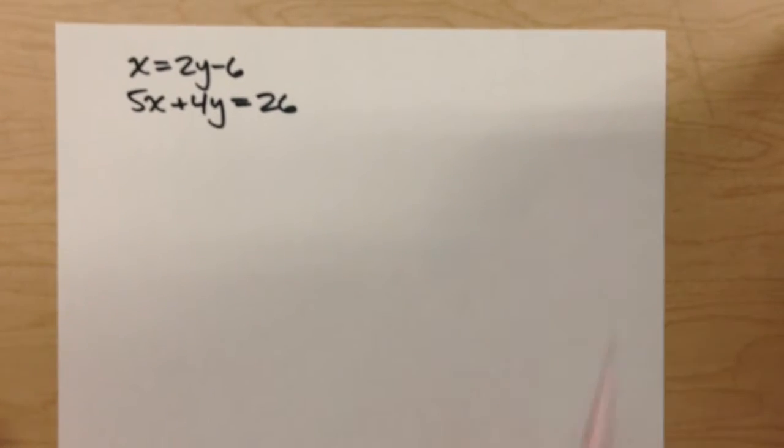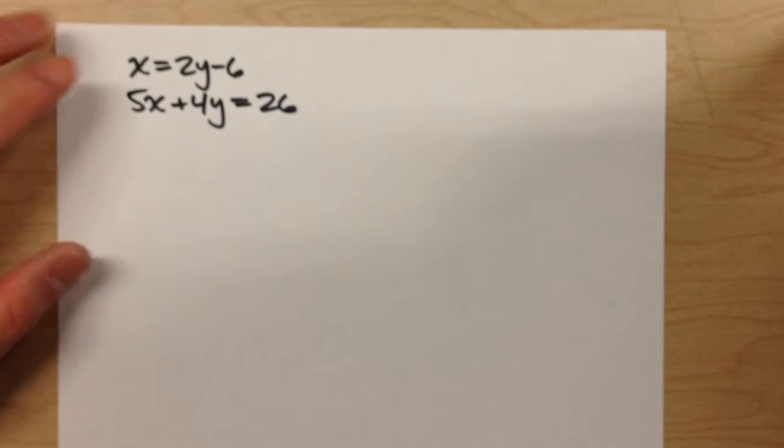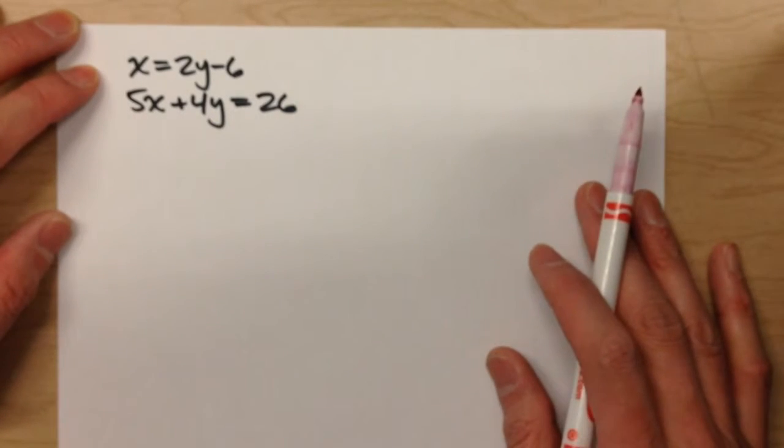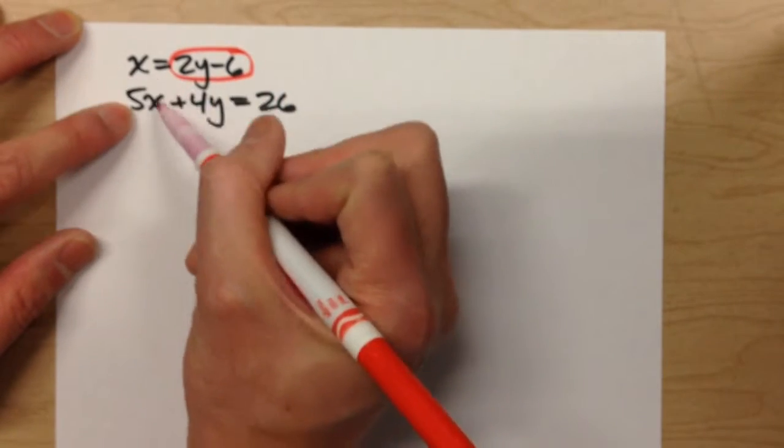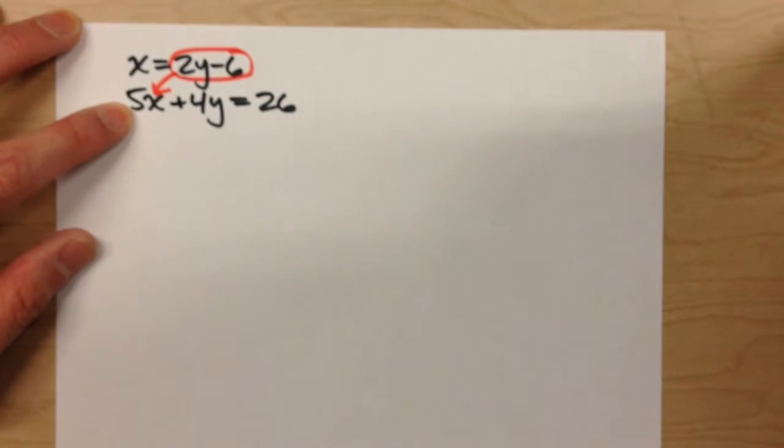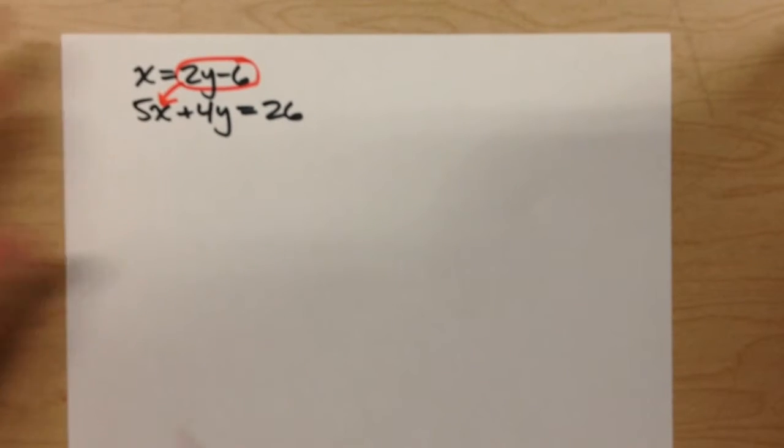Fortunately, it doesn't change our method very much. We're still going to use substitution. The difference is, we're going to substitute all this stuff in for x into the second equation instead of y.